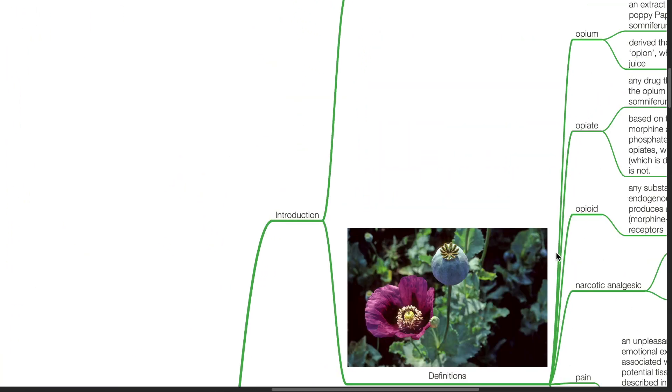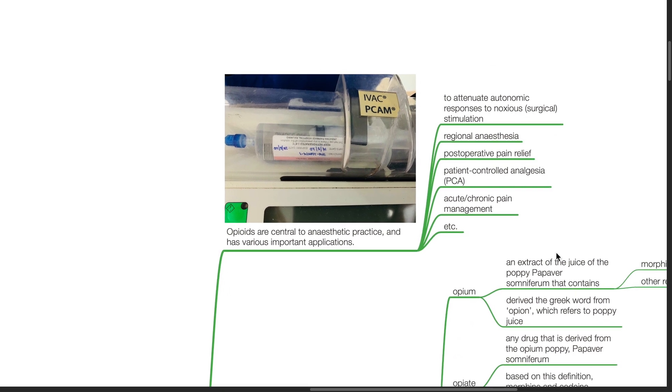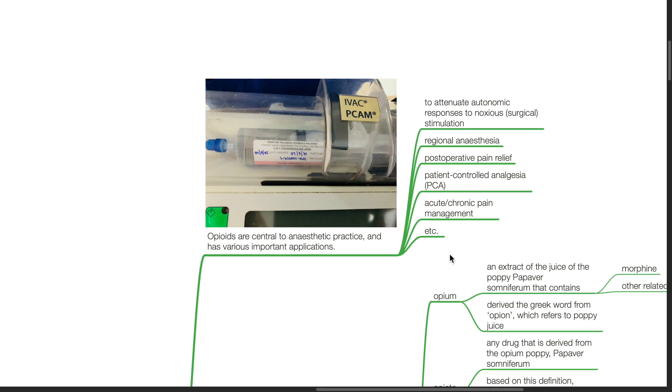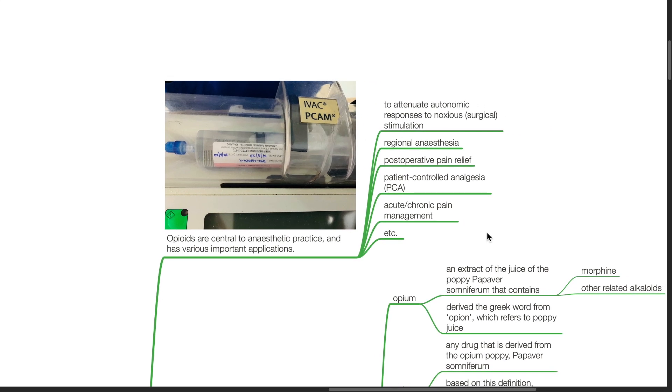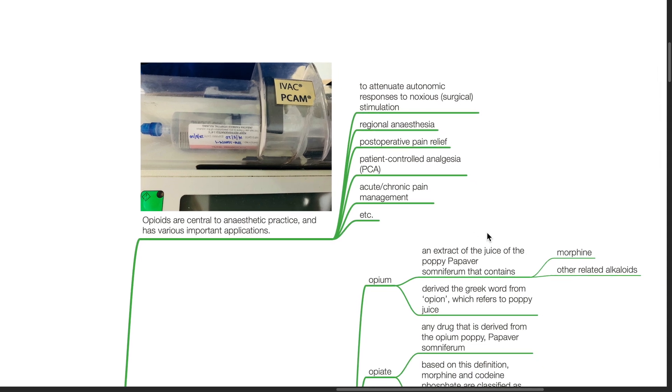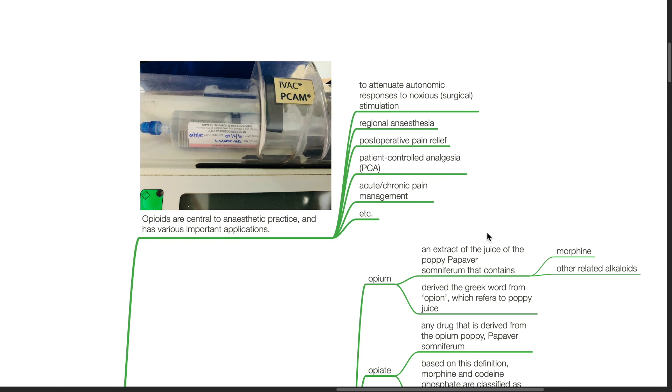Introduction. Opioids are central to anesthetic practice and has various important applications. Examples include to attenuate autonomic responses to noxious stimulation, regional anesthesia, post-operative pain relief, patient-controlled analgesia, acute or chronic pain management, etc.